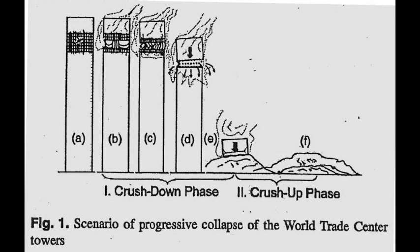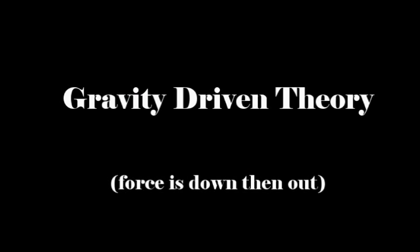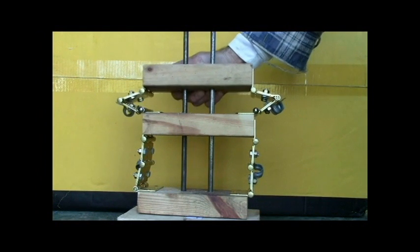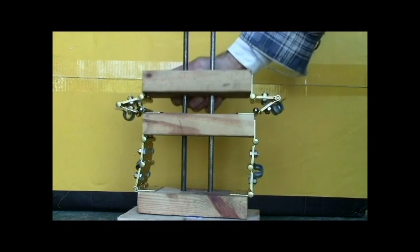A mathematical paper explained that the upper, lighter part of the structure crushed the larger, stronger, lower part all the way to the ground, and then the smaller section crushed itself back up. Like the pancake theory, the pile driver theory relies on gravity for all the motions observed, and hence is another down-and-out theory. But is this possible?